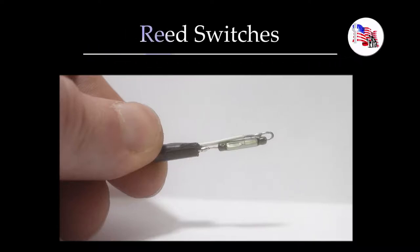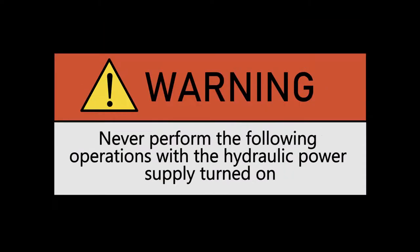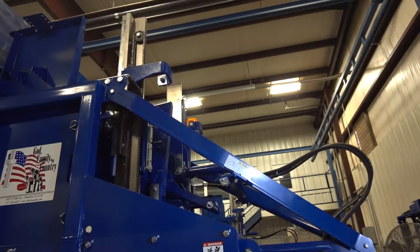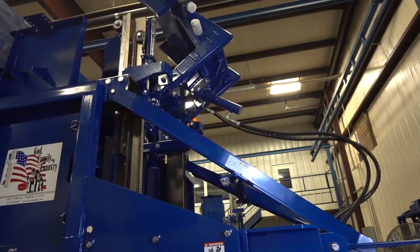This video will explain how reed switches work and how they are used on the Bail Bandit. Reed switches detect the presence of magnets and are used on the Bail Bandit to accurately detect the location of some important moving components.